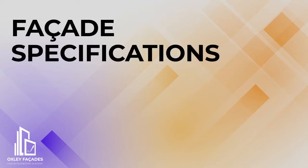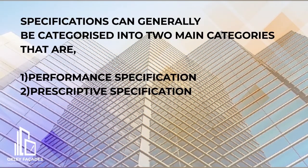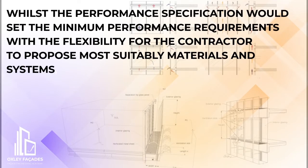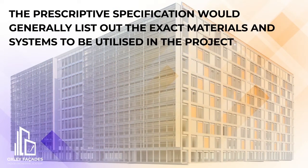Facade specifications can generally be categorized into two main categories: performance specification and prescriptive specification. The performance specification sets the minimum performance requirements with the most flexibility for the contractor to propose suitable materials and systems, while the prescriptive specification generally lists out the exact materials and systems to be utilized in the project.